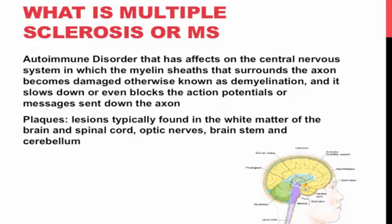Let's talk about plaques, or evidence of multiple sclerosis. They are lesions that result from inflammation caused by your immune system attacking the myelin. These plaques are typically found in the white matter of the brain, the spinal cord, and the optic nerve, which relays visual information from the eye to the brain.